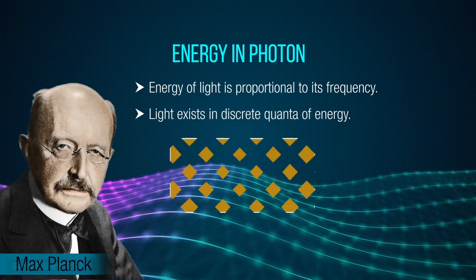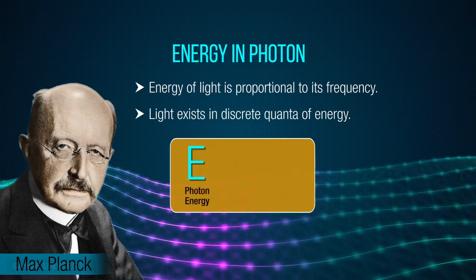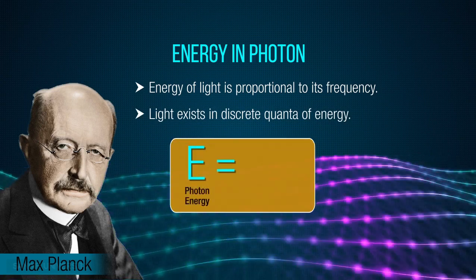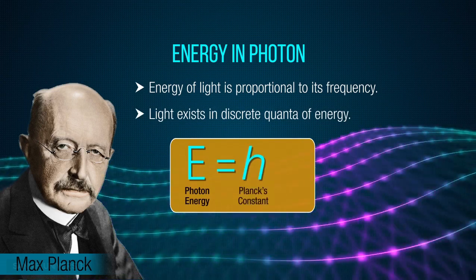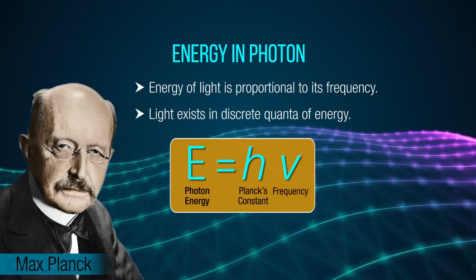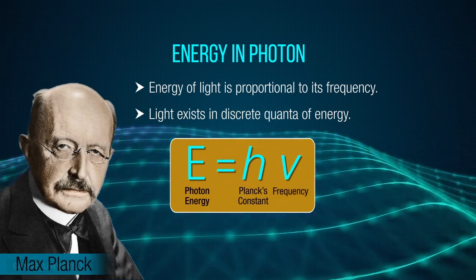The photon energy, E, can be mathematically given as the product of Planck's constant, h, and frequency, ν. Take a look at the energy equation.